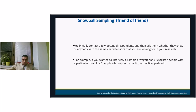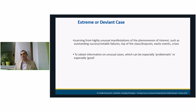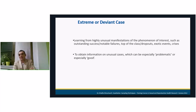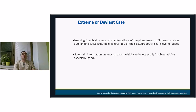Now we continue with extreme or deviant case sampling. As the name suggests, we learn from those who are on the extremes — meaning they have very high or very low achievements regarding the phenomenon of interest. We have outstanding cases: very successful persons or some failures, top of the class, or some exotic events and crises. The logic is that they could provide a rich source of information regarding the phenomena of interest that we are trying to research.